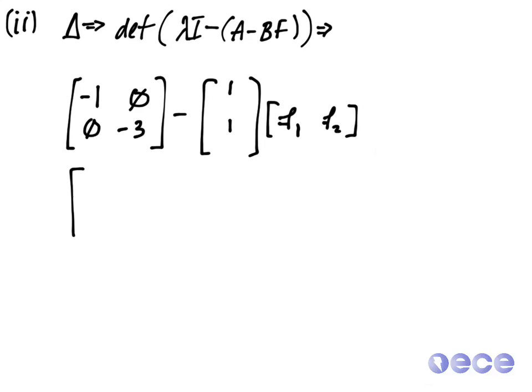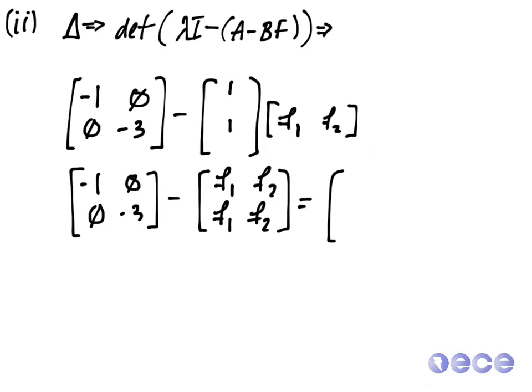So this is the same as minus 1, 0, 0, minus 3, minus f1, f2, f1, f2. So we can now write A minus BF as minus 1 minus f1, minus f2, minus f1, and minus 3 minus f2. So this is A minus B times F.